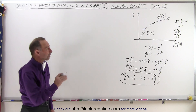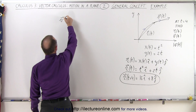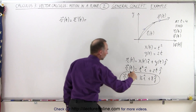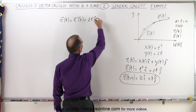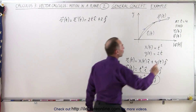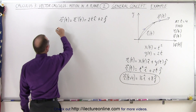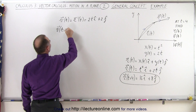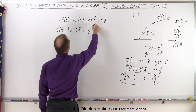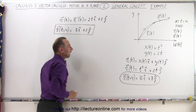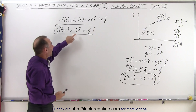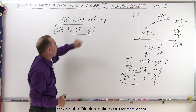Next, we find the velocity vector. The velocity vector as a function of time equals the derivative of the position vector. Taking the derivative gives us 2t in the i direction plus 2 in the j direction. Evaluating at t equals four: the velocity vector is 2 times 4, which is 8 in the i direction, plus 2 in the j direction. So after 4 seconds, we're moving 8 units per second in the x direction and 2 units per second in the y direction.